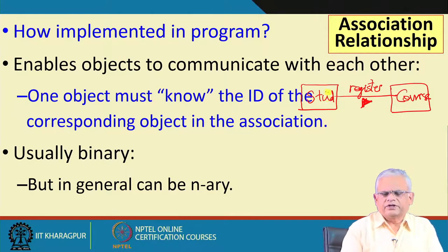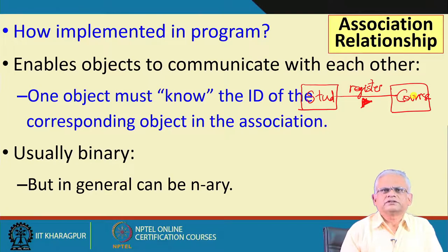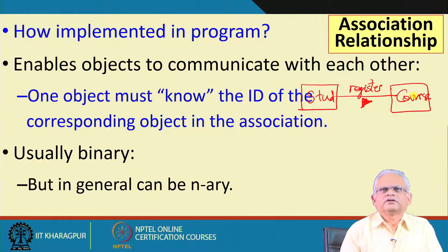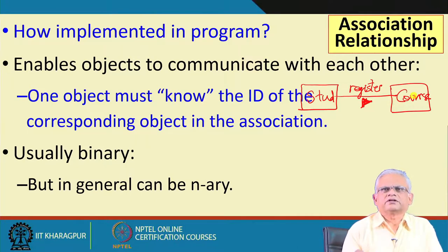This is an example of a binary relation. In general, the association can be n-ary: it can be unary (one class associated to itself), binary (two classes), ternary (three classes), quaternary (four classes), and so on.